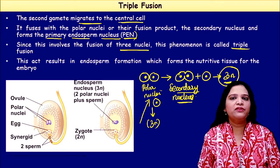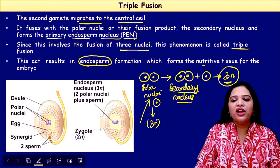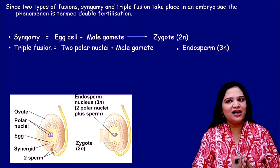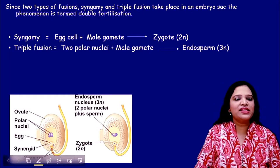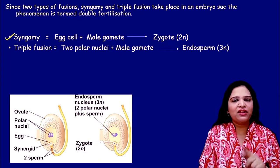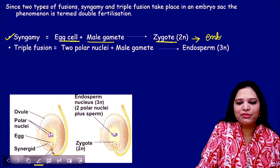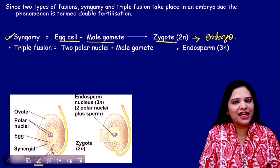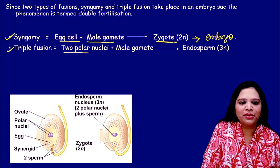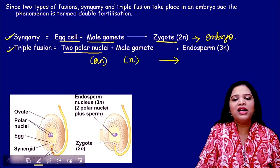The end product of triple fusion is the endosperm — the nutritive tissue that provides food to the growing embryo. In double fertilization, two events occur: first, syngamy, where the first gamete fuses with the egg cell to form a zygote that will develop into the embryo; and second, triple fusion, where the second male gamete fuses with the two polar nuclei to form the 3n PEN structure, which develops into the endosperm.